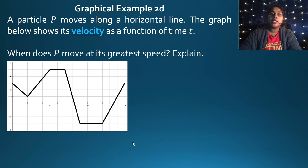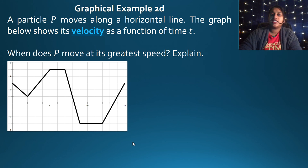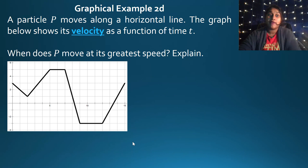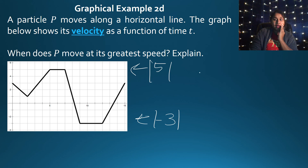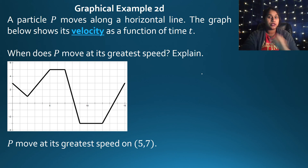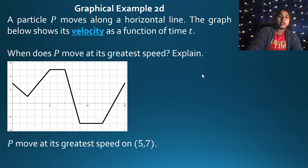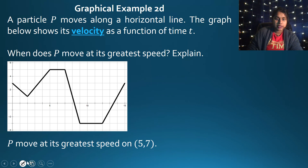Greatest speed on the velocity graph is found at the max or min of the velocity graph itself. The highest point is at velocity equals 5, and the lowest is at velocity equals negative 3. Taking absolute values, 5 is the greatest, so its greatest speed occurs around the interval from 5 to 7 where the velocity reaches its peak.